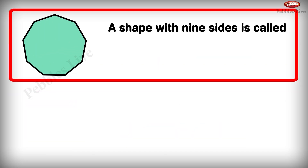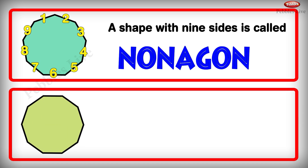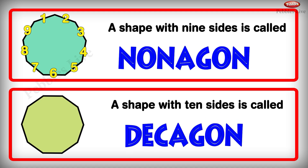A shape with 9 sides is called a nonagon: 1, 2, 3, 4, 5, 6, 7, 8, 9. A shape with 10 sides is called a decagon: 1, 2, 3, 4, 5, 6, 7, 8, 9, 10.